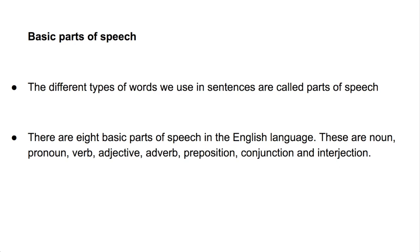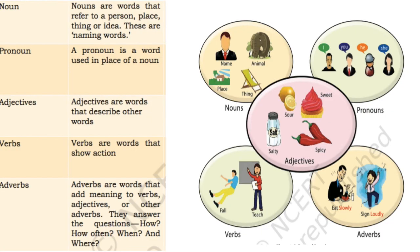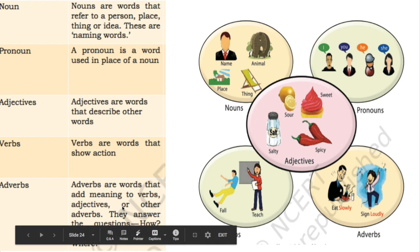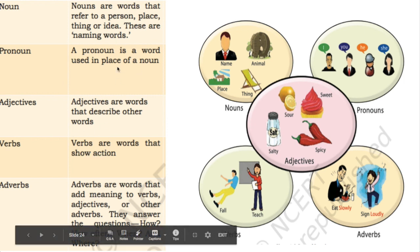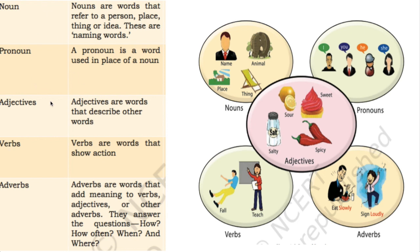Here are some definitions. Nouns are words that refer to a person, place, thing, or idea — these are naming words. A pronoun is a word used in the place of a noun. Adjectives are words that describe other words. Verbs are words that show actions. Adverbs are words that add meaning to verbs. These are definitions you already know from junior classes.